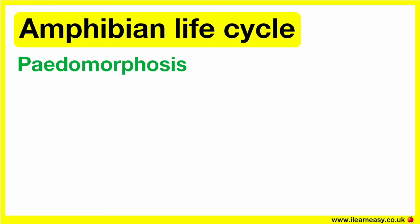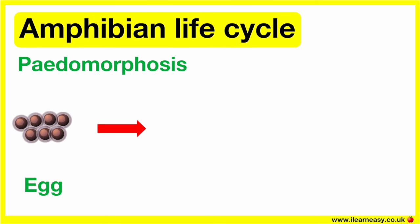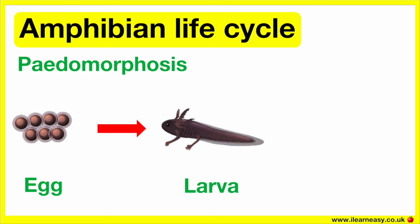The life cycle of an amphibian that goes through pedomorphosis consists of two stages: egg and larva. The life cycle of a salamander is an example of pedomorphosis. This is because the salamander retains its larval traits even at its adult stage — therefore, it doesn't change much from its larval stage and has adult traits even though it looks like it's still in its larval stage. In its adult form, the salamander can reproduce to repeat this cycle.